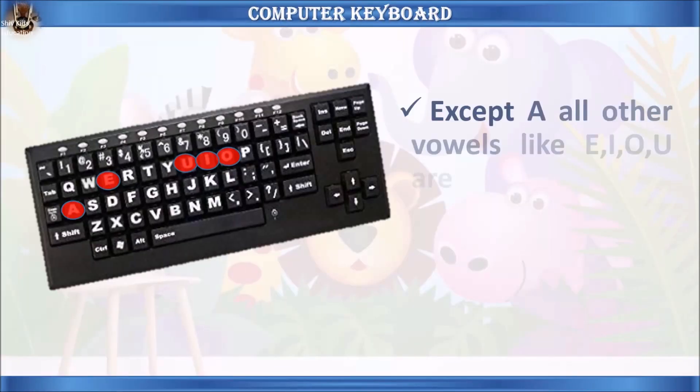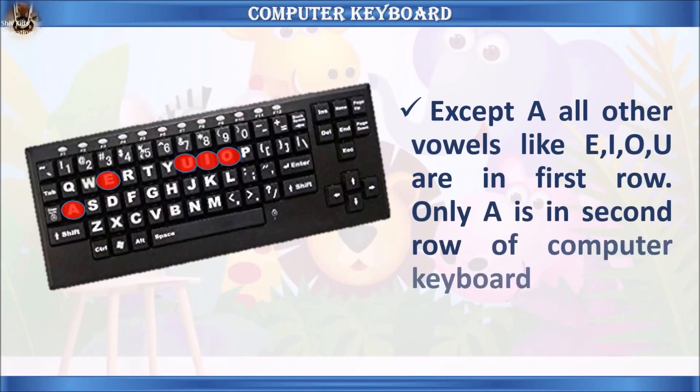Let's learn some facts about the computer keyboard. Except for A, all the other vowels — E, I, O, and U — are in the first row only. A is in the second row of the computer keyboard.